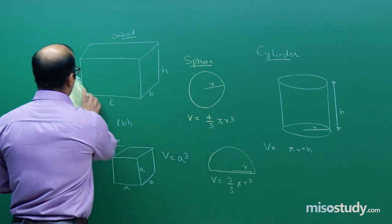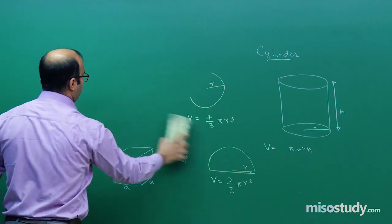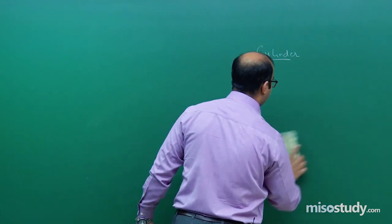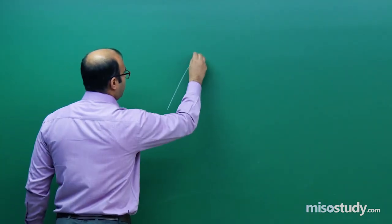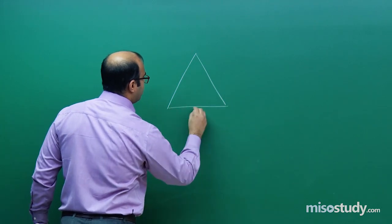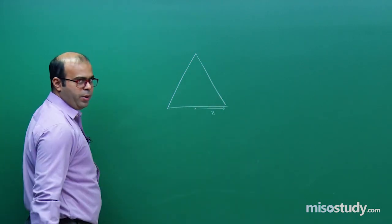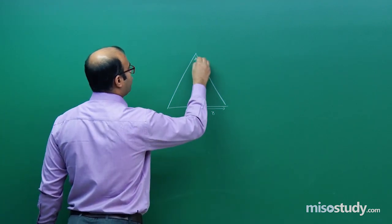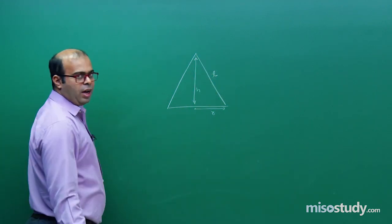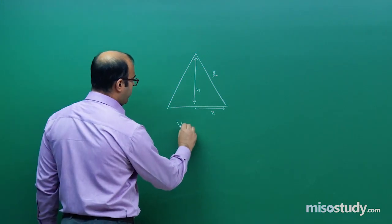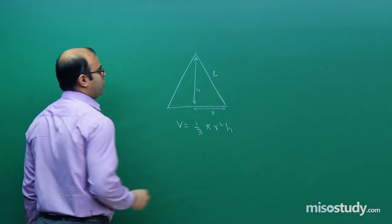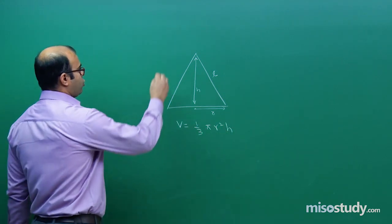Next we have the cone. To find the volume of a cone we need its radius and height. For a cone with base radius R and height H, the slant height is L = √(R² + H²), and the volume is 1/3 πR²H.